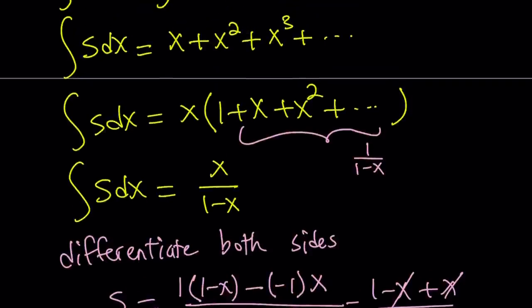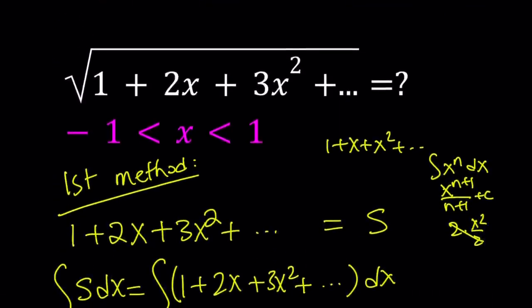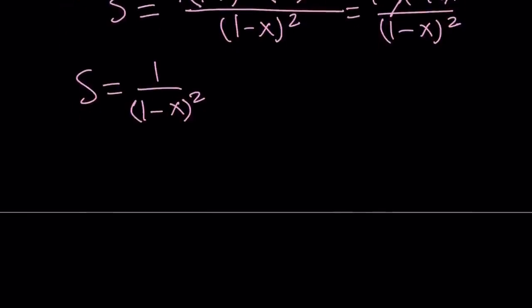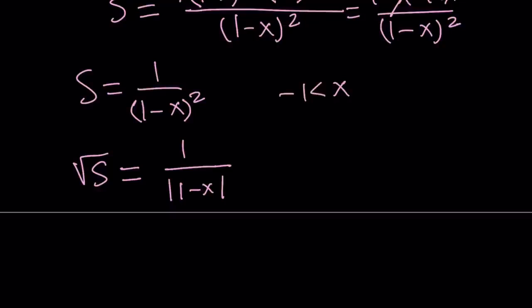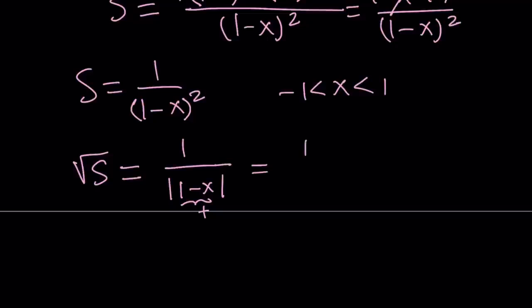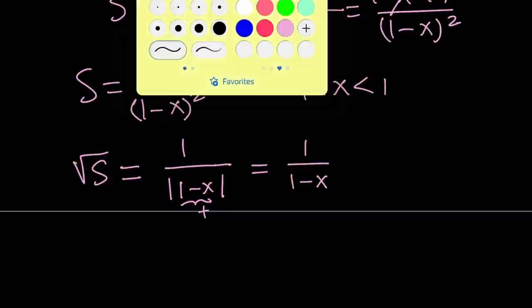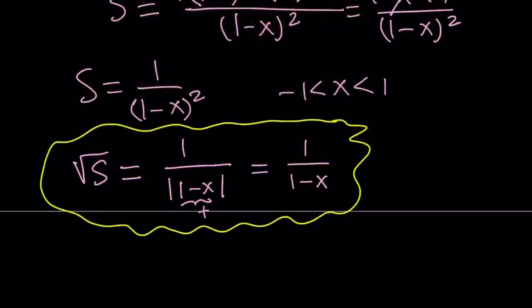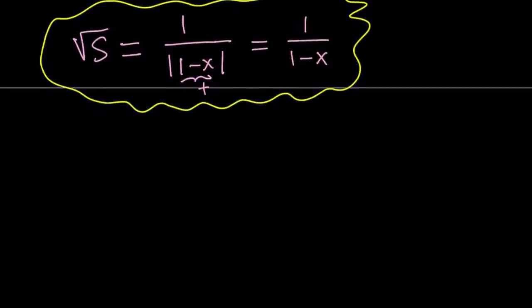Remember, our goal is to find the square root of S. So let's square root both sides. We have to be careful and use the absolute value. Our given conditions say x must be between negative 1 and 1, so 1 minus x is going to be a positive quantity, and the absolute value doesn't change anything. So square root of S is going to be 1 over 1 minus x. That's the answer — that's what we're looking for. Let's go ahead and talk about the second method now.